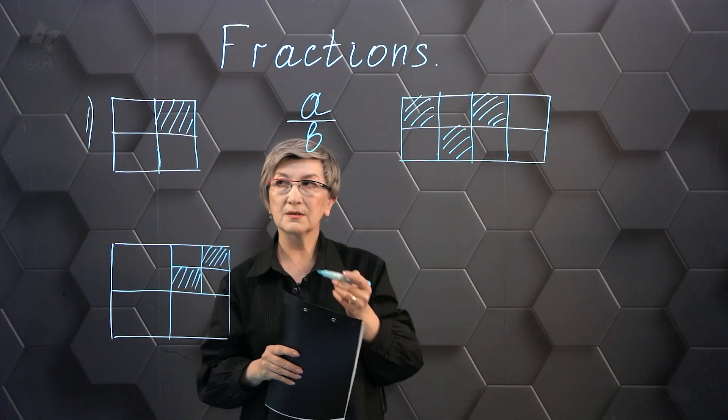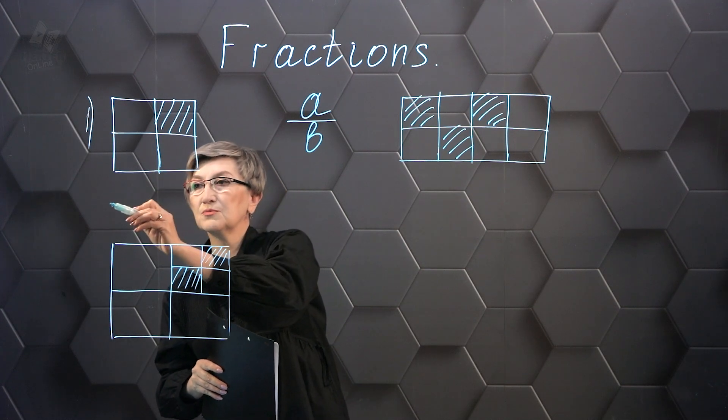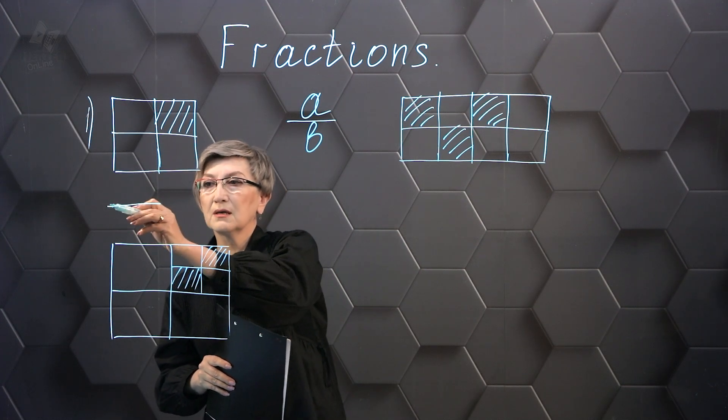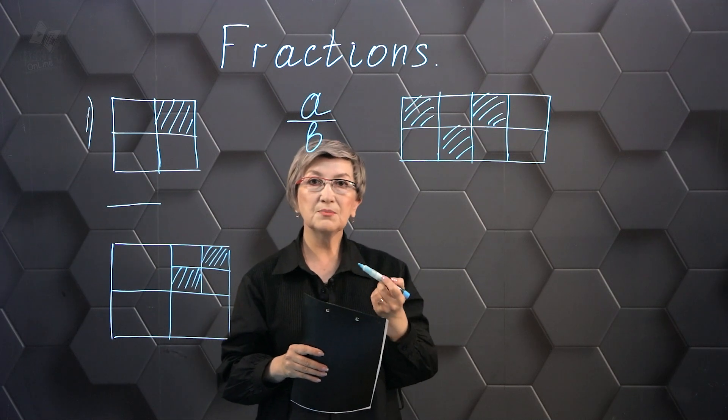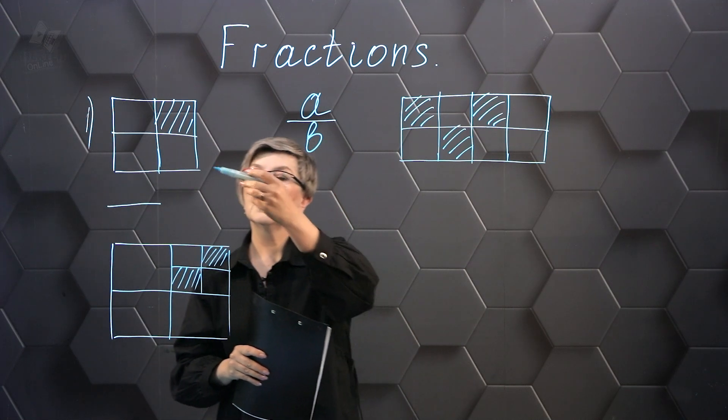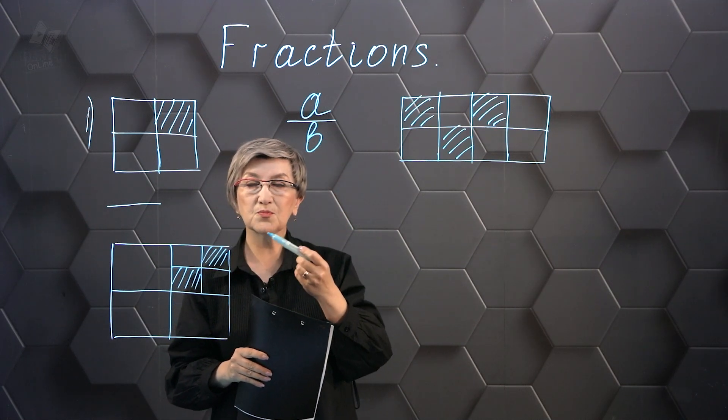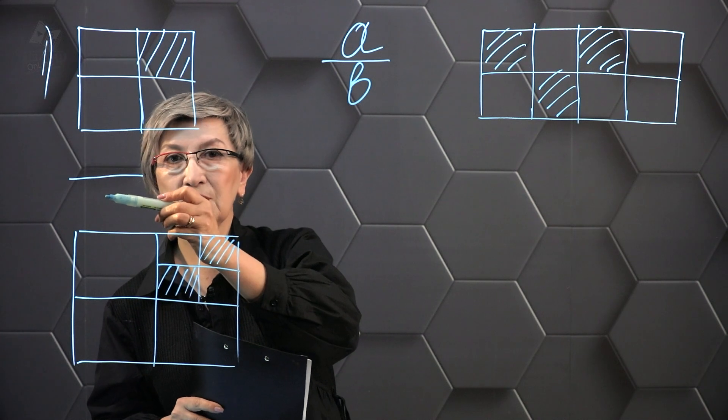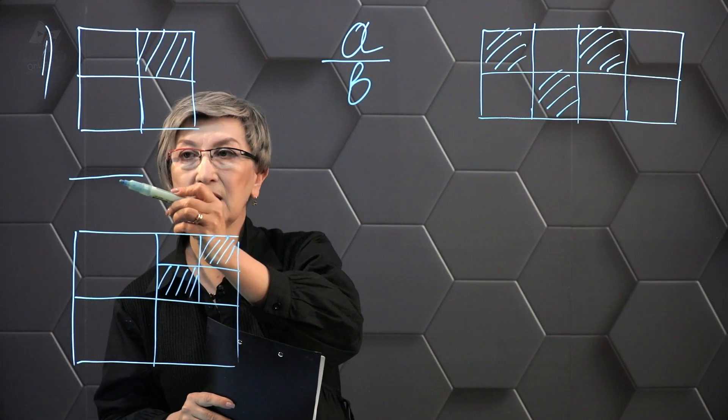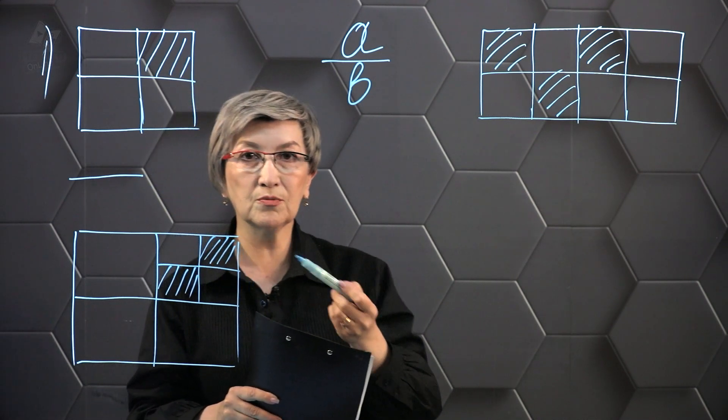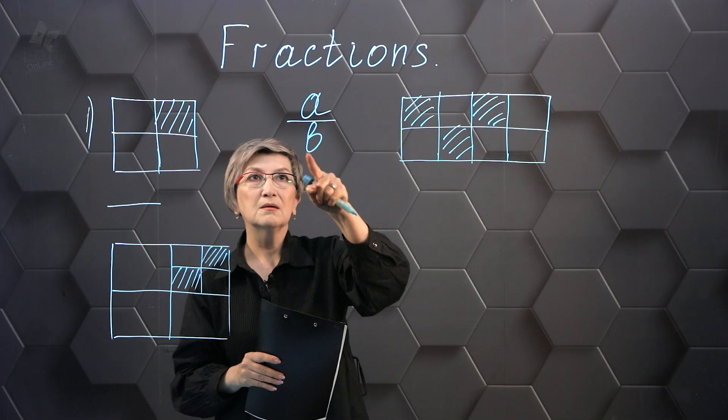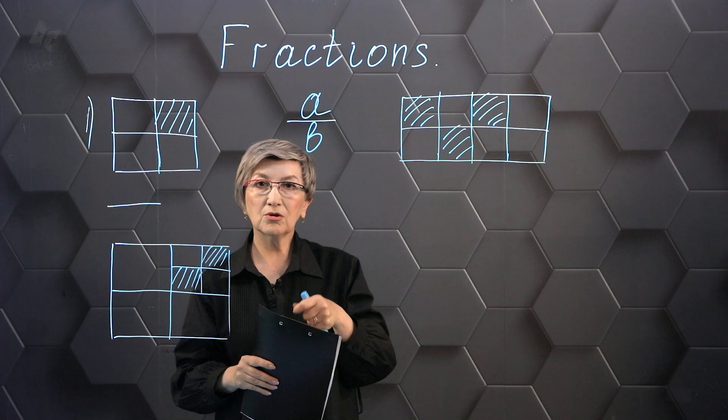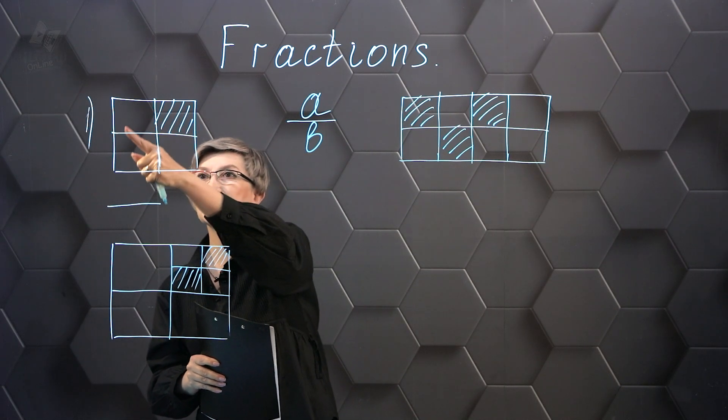Then, in our case, we draw the fraction line and write the fraction. But first, we're going to remember what number we should write below the fraction line and what number we should write above the fraction line. Under the fractional line, we have to write a number that represents the number of all the parts.